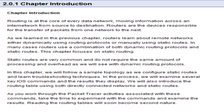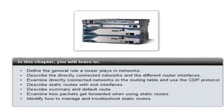In this chapter, we will follow a sample topology as we configure static routes and learn troubleshooting techniques. In the process, we will examine several key inter-networking operating system commands and the results they display. We will also introduce a routing table using both directly connected networks and static routes. As you work through the packet trace activities associated with these commands, take the time to experiment with the commands and examine the results. Reading the routing tables will soon become second nature.